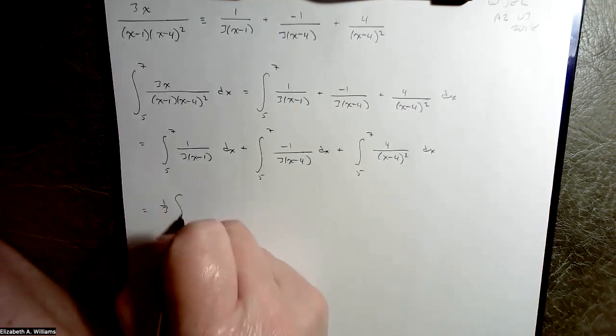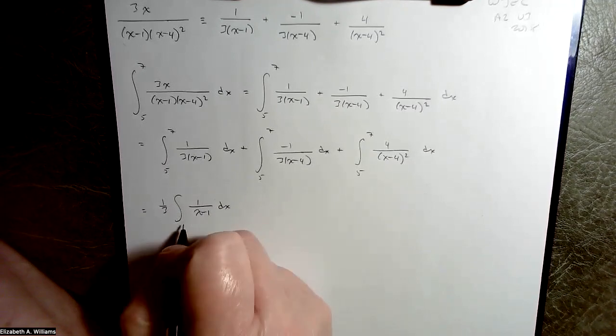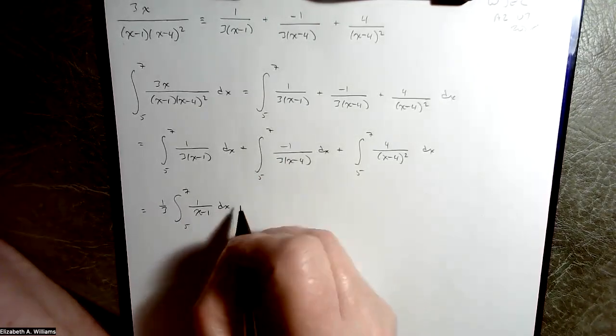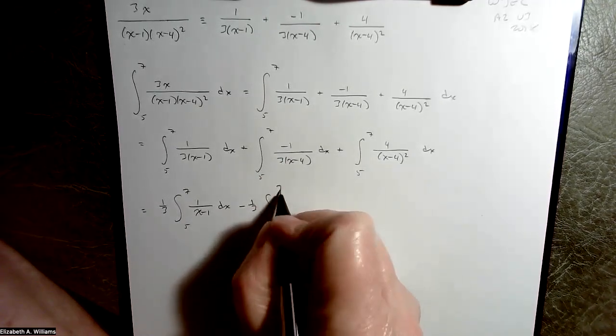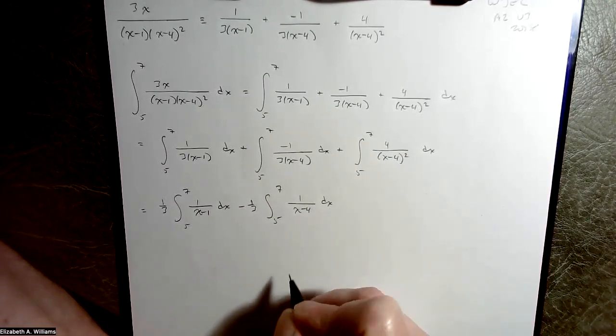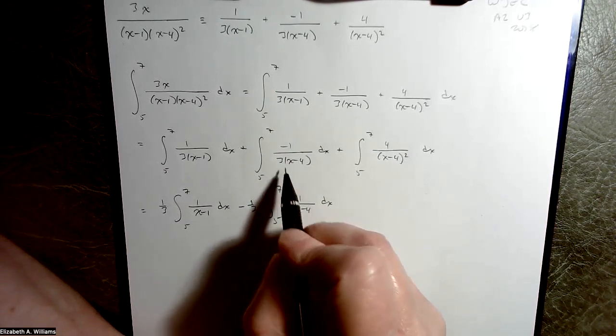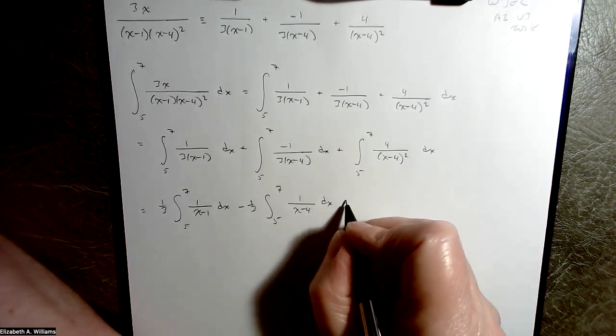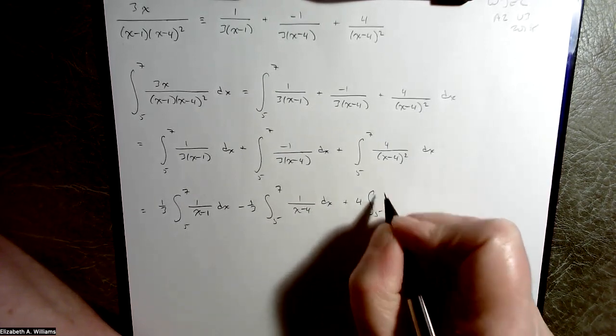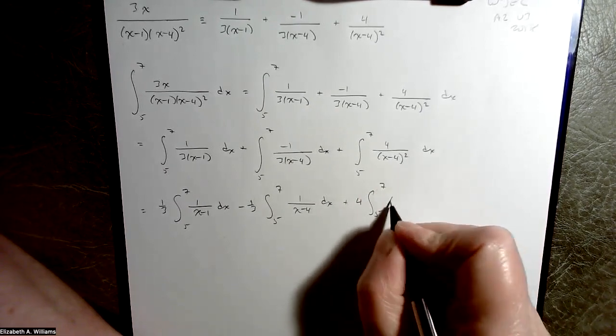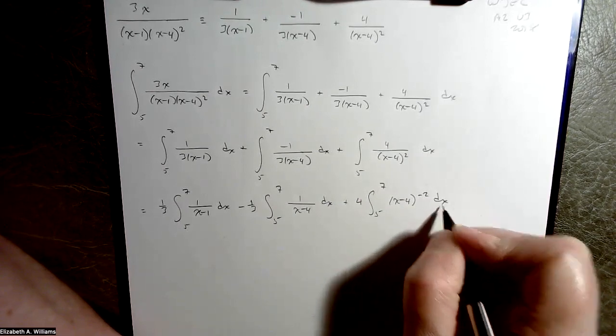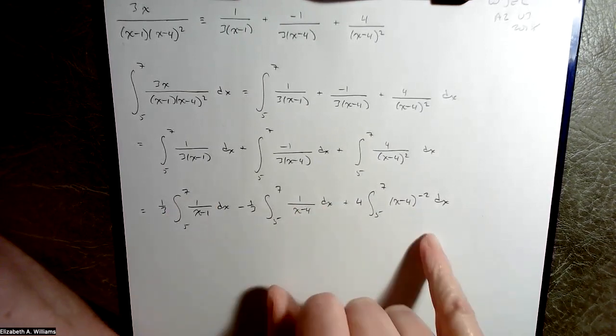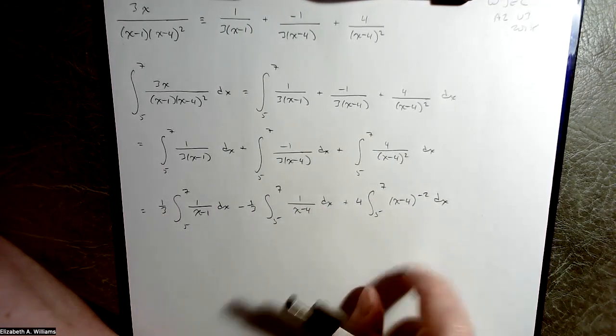So I've got 1/3 integral 1 over x minus 1 dx from 5 to 7. Then I'm going to pull the minus 1/3 out, integral 5 to 7, 1 over x minus 4. I'm going to bring the 4 out on the last one and rewrite that with a negative index, (x minus 4) to the minus 2 dx, because this one is a power function affair. These are log affairs, variants on 1 over x.